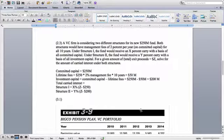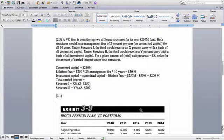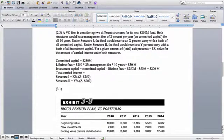In 2.3, we're looking at different structures here for a 250 million fund. Committed capital is 250. When we're doing structure one, we're basing it off of the committed capital. So we're going to use X percent times Z, which is the exit proceeds, minus 250, the committed capital.